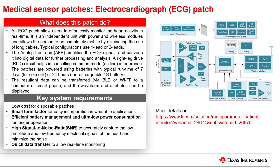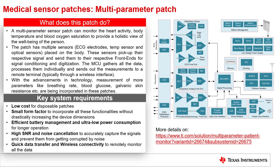A multi-parameter sensor patch can monitor the heart activity, body temperature, and blood oxygen saturation to provide a holistic view of the well-being of the person. The patch has multiple sensors — ECG electrodes, temperature sensor, and optical sensors — placed on the body. These sensors pick up their respective signals and send them to the respective front ends for signal conditioning and digitization. The MCU gathers all the data, processes them individually, and sends out the measurements to a remote terminal, typically through a wireless interface. With advancements in technology, measurements of additional parameters like breathing rate, blood glucose, and galvanic skin resistance are also being incorporated.